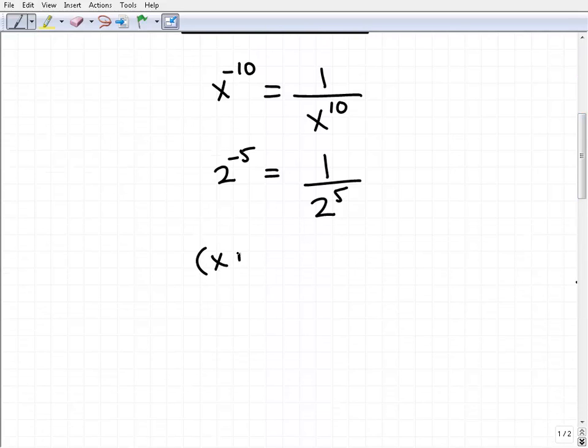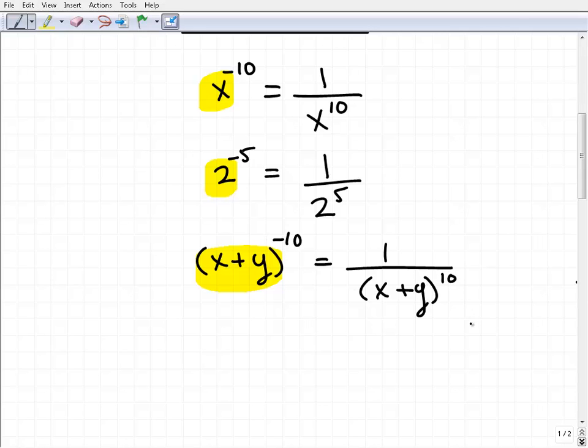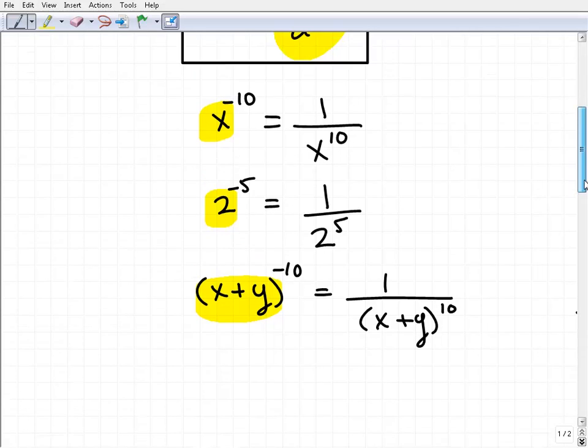Let's look at another one. How about x plus y to the negative 10? Now in this case, our base is just simply something that's a little bit larger, but the property, the rule still works the same. It would just be 1 over this entire base, x plus y, gets moved down to the denominator, and the power becomes positive. Hopefully you can see the pattern here.